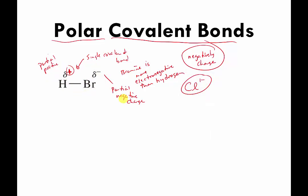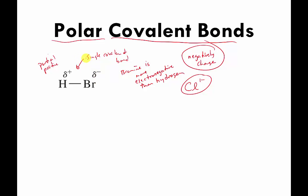The way chemists draw this is with the Greek letter delta — this lowercase delta. If you want to tell people that part of your molecule has a partial negative electrical charge, you write the Greek letter delta with a minus sign next to it. If you want to show a partial positive charge, you write delta with a plus sign. This is chemistry's way of saying the atoms are sharing, but not sharing equally. The electrons are spending more of their time on one side of the molecule, making that side slightly negative and the other side slightly positive.